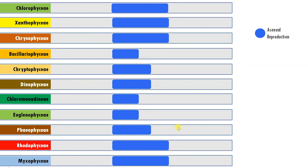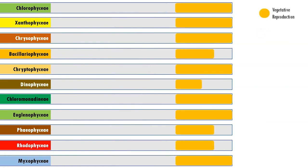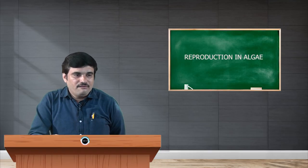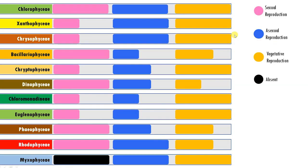Vegetative mode of reproduction is preferred by almost seven classes: Myxophyceae, Euglenophyceae, Cryptophyceae, Chrysophyceae, Xanthophyceae, and Chlorophyceae. Summarizing these things, we can see the preferences of various sexual, asexual, and vegetative modes of reproduction across the different classes.